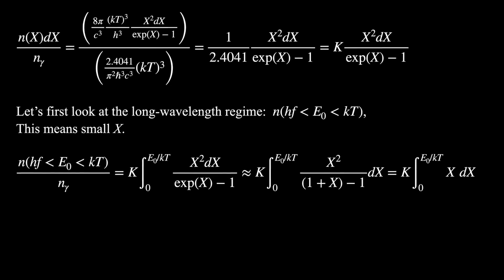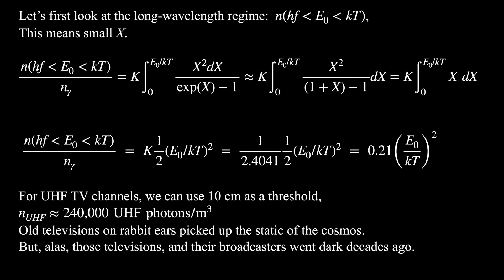And so that's what you get in the final equation, is the integral of 0 to E₀/kT of x dx. And that's very simple. That's basically just 1/2 times x squared, evaluated from E₀/kT and 0. So once you do that, you get K times 1/2 (E₀/kT)². And that's the answer. It's pretty simple. Substituting the 1/2.4041 for K, and then dividing that by 2, you get 0.21, which is the answer in the textbook. And it's kind of fun to play around with it. Let's pretend like 10 centimeters is our wavelength, and you then get about 240,000 UHF photons per cubic meter, which is pretty cool. And those can only be picked up on old televisions. And the old televisions that would have picked those things up, the broadcasters were forced by the Federal Communications Commission to go offline.